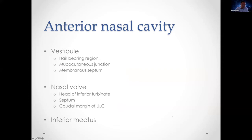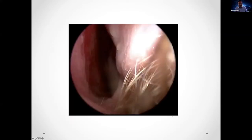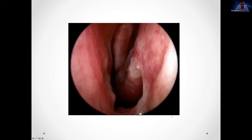The internal nasal valve is formed by the head of the inferior turbinate, the septum, and the caudal margin of the upper lateral cartilage. This is an endoscopic view, though you can get this view doing anterior rhinoscopy with a headlight and Thudicum's speculum — you can see the hairs of the vestibule, the septum, and the nasal floor.